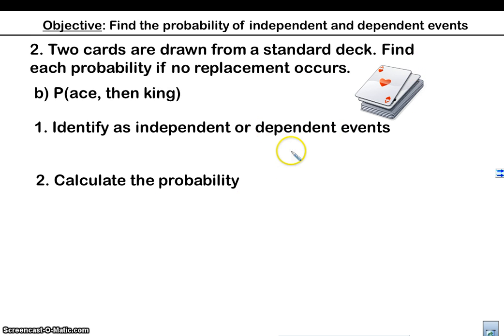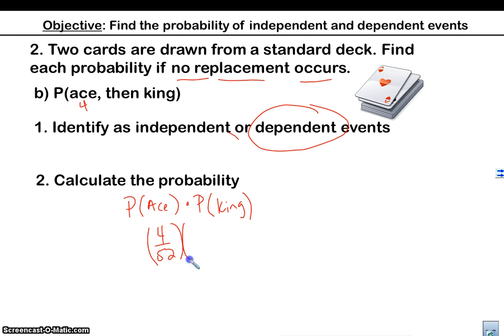I got some practice problems here for you. So I'm going to do this last one here. Two cards are drawn from standard deck. Find the probability of no replacement occurs. So we're dealing with the same thing. These are going to be dependent events. The probability of getting an ace and then a king. So what's the probability of getting an ace? There are four aces in the deck out of 52 cards. And then we've already taken a card out, but we haven't taken a king out. So there's still four kings in the deck, but we've taken a card out. So there's 51 left. So we've got 4 over 52 times 4 over 51, which equals 4 over 663.